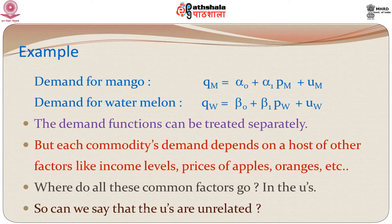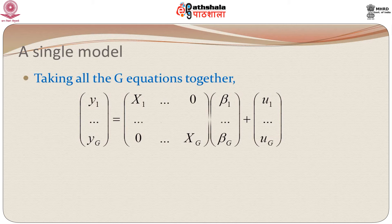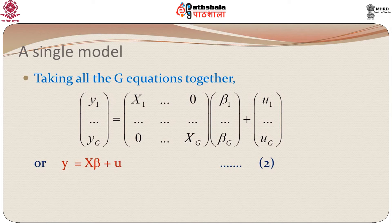So if we have correlation between u_m and u_w, should we look at the demand functions for mango and watermelon separately, or take them simultaneously? Let us look at a single model for all g equations taken together. We take y_1, y_2, through y_g and write them in terms of the x's, betas, and e's. The first row gives y_1 equal to x_1 beta_1 plus e_1; the second gives y_2 equal to x_2 beta_2 plus e_2, and so on. We write this combined model as y equal to X beta plus e, and we call this equation 2.